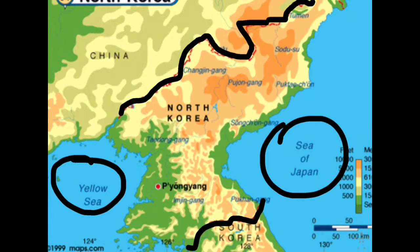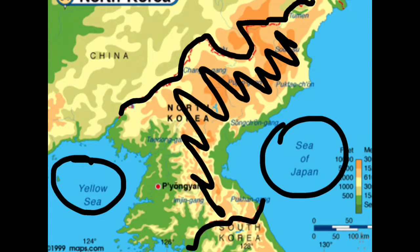North Korea has many mountains and hills separated by deep, narrow valleys. There are wide coastal plains found in the west. However, these plains are not as present in the east. About 80% of North Korea's land area is covered with mountains and uplands, which can be seen in this area here with the higher elevation.